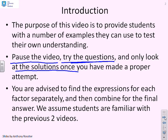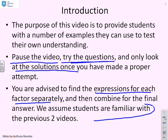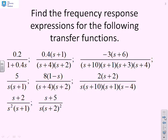The method we suggest is to find the expressions for each factor separately and then combine them. This is covered in the previous two videos, so we're going to assume you are familiar with those. The question: find the frequency response expressions for the following transfer functions — there are eight of them. Pause this video while you try them, and I will go through each in turn.